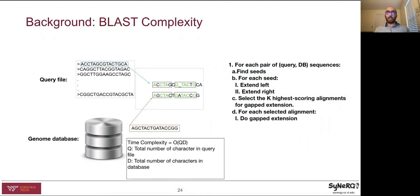Accordingly, the upper bound time complexity for BLAST is order of Q × D, where Q is the total number of characters in the query and D is the total number of characters in the database. While BLAST implements approximate matching that reduces execution time compared to exact alignment algorithms, it is still bottlenecked by the exponentially growing database sizes, which motivates the need for parallel and distributed BLAST.